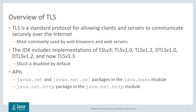The JDK includes implementations of various versions of the SSL and TLS protocols. Specifically, SSL version 3, TLS version 1.0 and 1.2, DTLS — which is the datagram version of TLS — version 1.0 and 1.2, and now with JDK 11, TLS version 1.3.